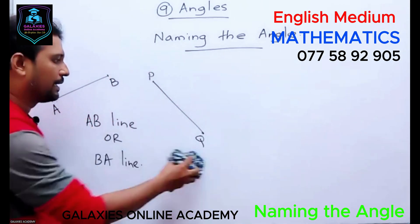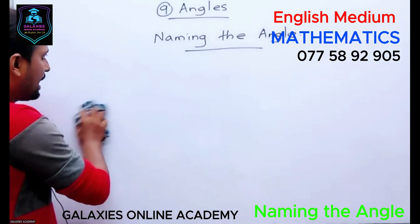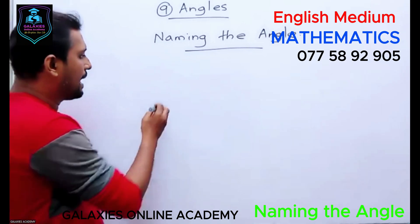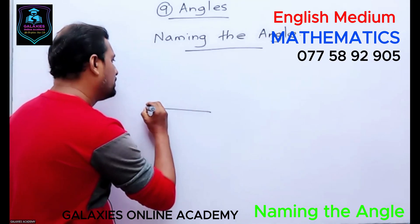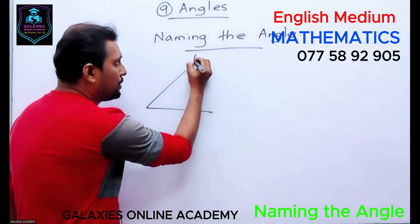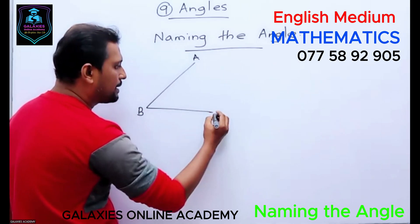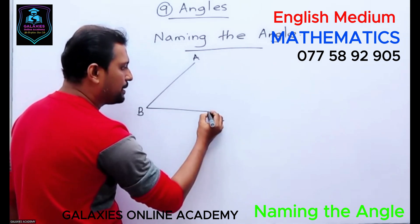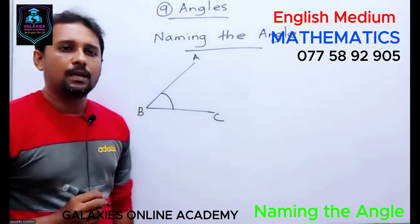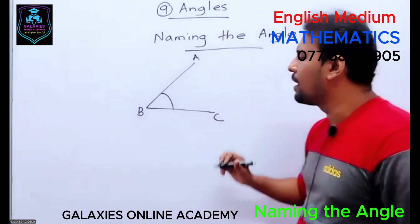Now look — I will draw an angle again to show naming the angle. You look at this angle. This straight line is AB and this straight line is BC. Can you identify what are the arms?